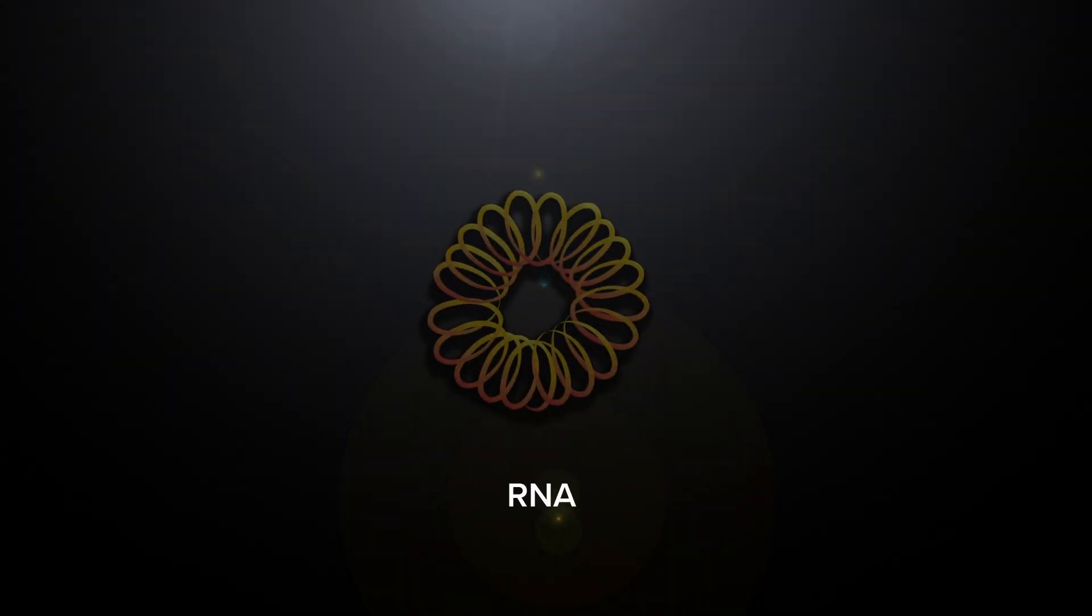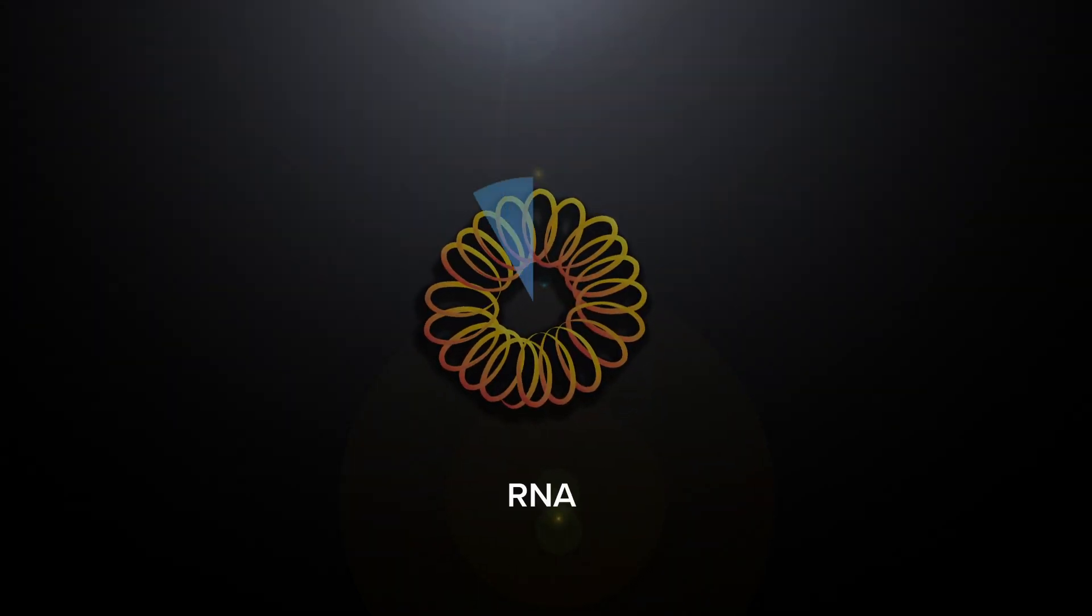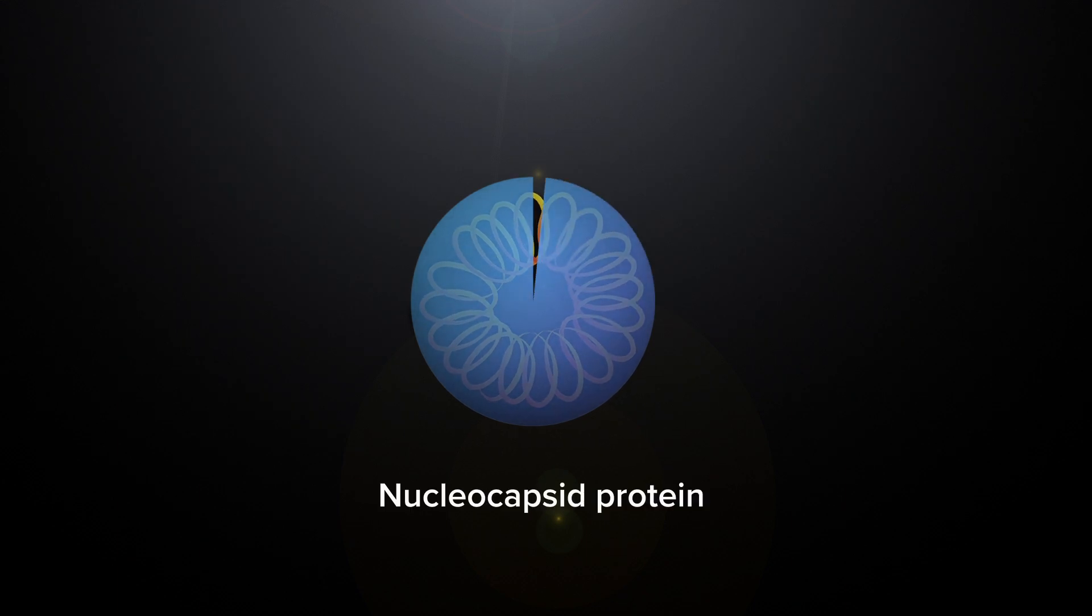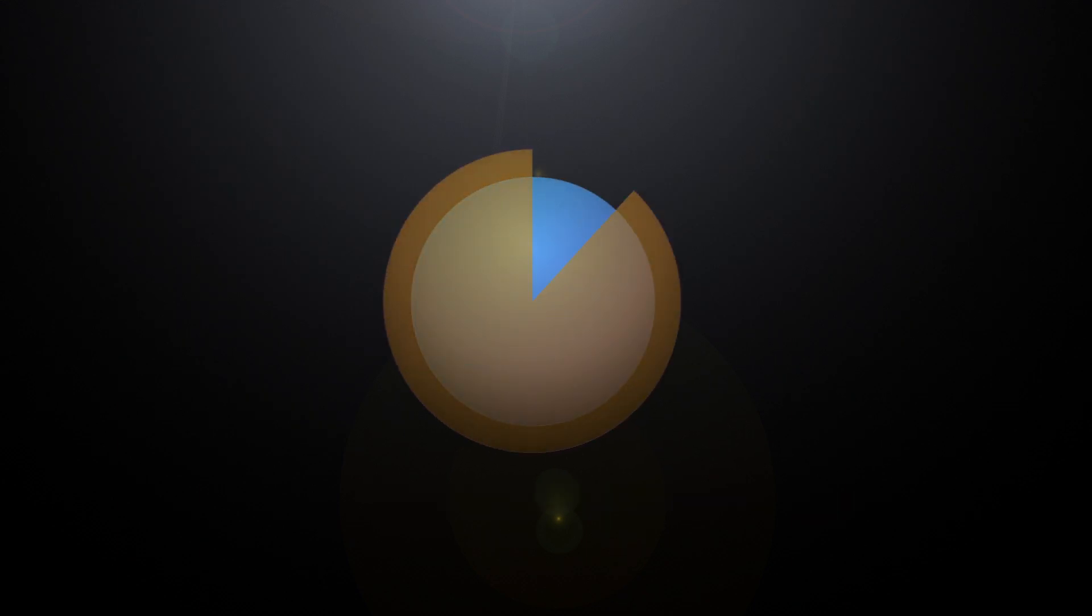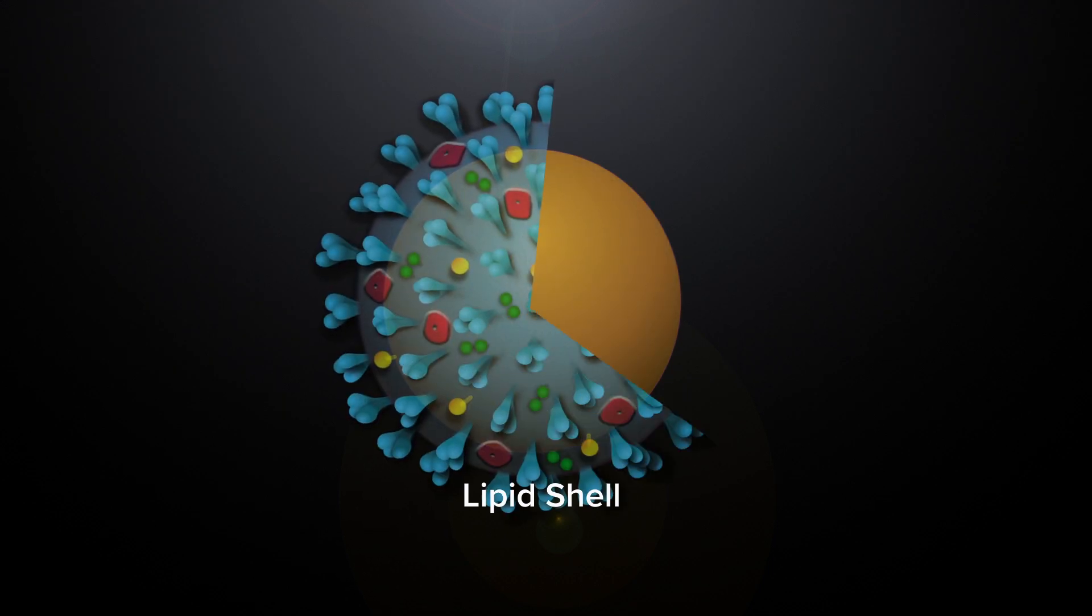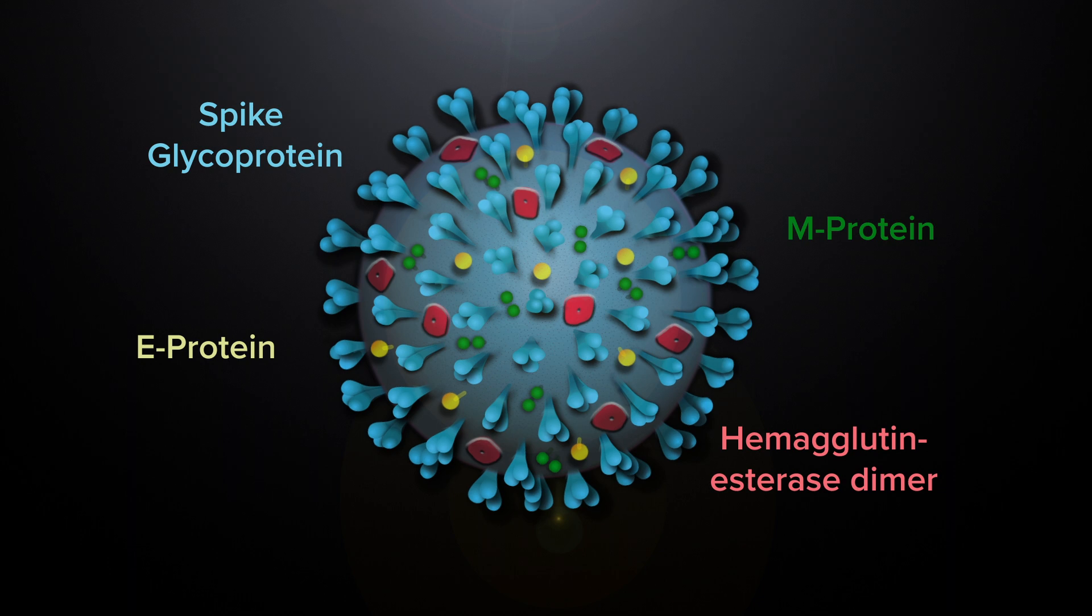RNA, which holds the genetic information for building more copies of the virus, is enveloped by a lipid shell taken from the host cell membrane in which the virus replicates itself, and coated with a spike protein molecule projecting from the virus particle.